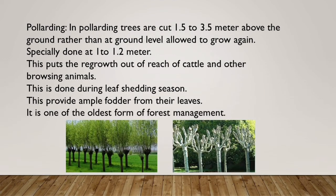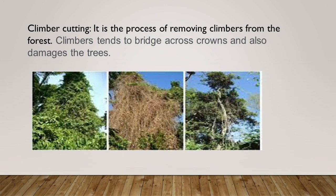Now, what is pollarding? In pollarding, trees are cut at 1.5 to 3.5 meters above the ground, rather than at ground level, and allowed to grow again. It is similar to coppicing, but coppicing is done from ground level whereas pollarding is done at a certain height, especially at 1 to 1.2 meters. This forces regrowth out of reach of cattle and other browsing animals. It is done during the leaf shedding season, providing fodder from leaves during the cold season when there is a shortage. Pollarding is one of the oldest forms of forest management.